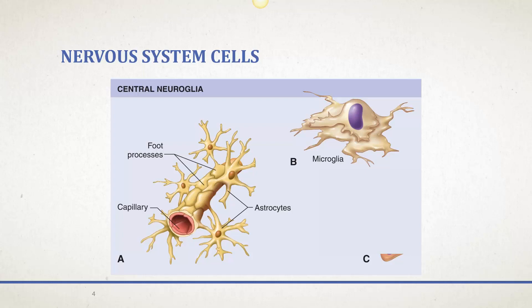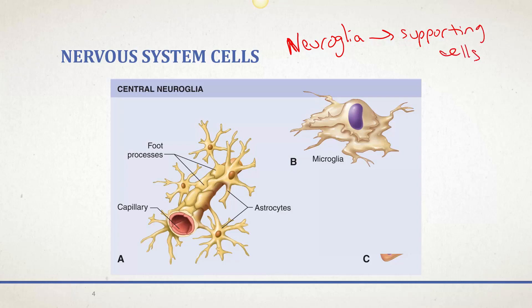Starting with the two major categories of cells: we have neural glia, which are the supporting cells, and then we have neurons, which are the conductive cells. Neurons are going to conduct the nerve impulses, while neural glia are just the supporting cells that help support the function of the nervous system.